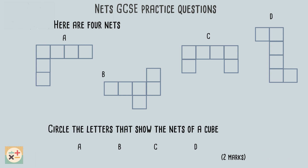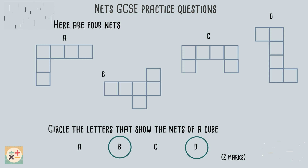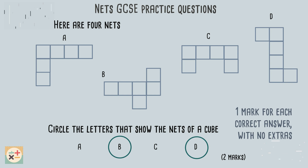Try visualizing this same net using a different square as the base — you will always end up with overlapping squares and missing sides. Try to visualize the rest of these nets in a similar way and pause the video. Remember there may be more than one way to fold these nets up. If you are finding this challenging, try using a piece of paper cut into the same shape as the net. We can see that nets B and D are the ones which will form a cube. The question is worth two marks — one mark for each correct answer, but we would lose a mark if we circled an extra incorrect answer.